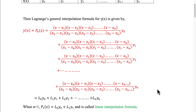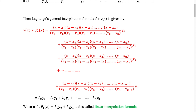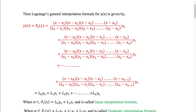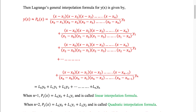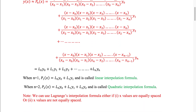Suppose in a question the value of n is equal to 1 — that means only two data points are given — you will get a first order polynomial as the interpolating polynomial. When n is equal to 2, that means three data points are given, in that case you will get a second degree polynomial as the interpolating polynomial, and it is known as the quadratic interpolation formula. We can use Lagrange's interpolation formula whether x values are equally spaced or not equally spaced — in both cases it is applicable.